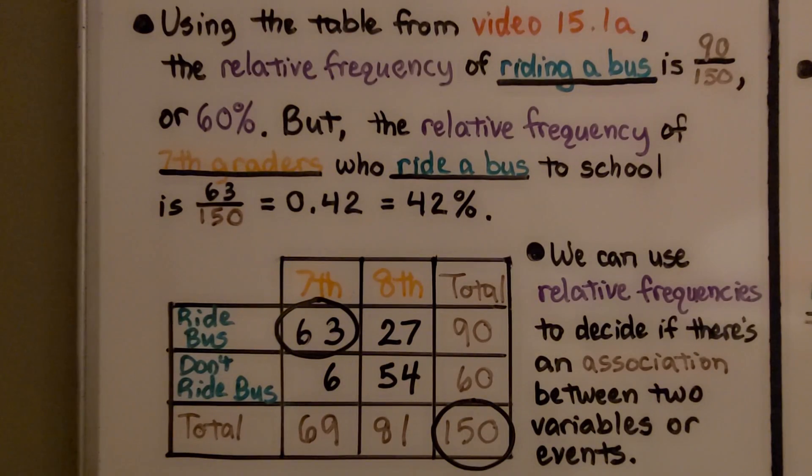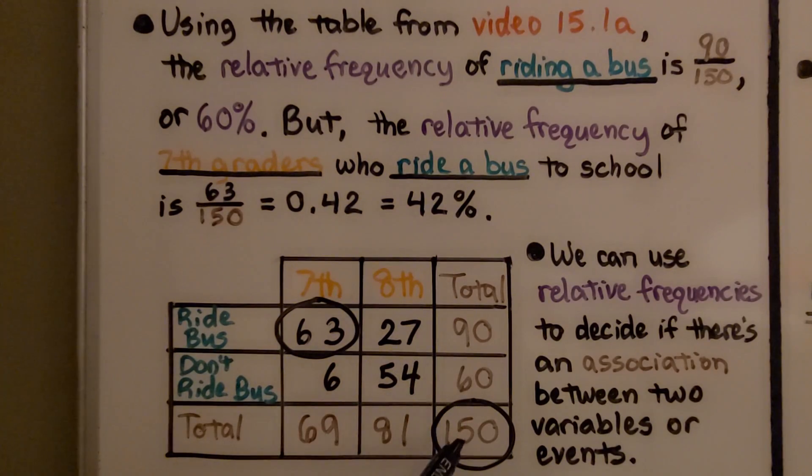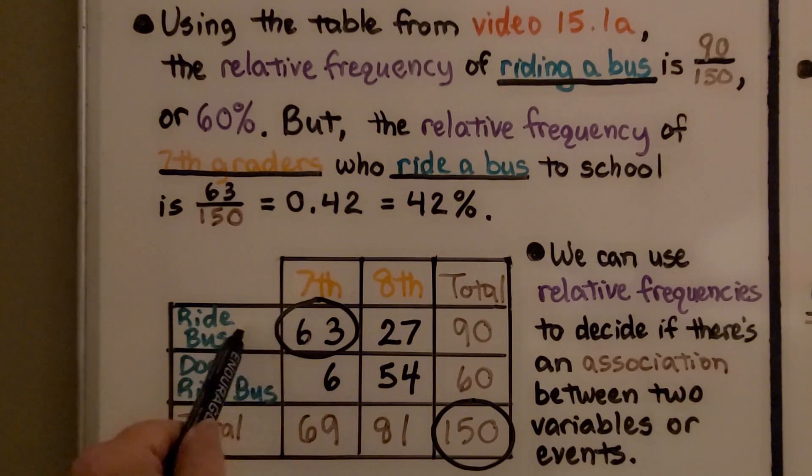Using the table from the previous video, 15.1a, the relative frequency of just riding a bus is 90/150, or 60%. We do 90 divided by 150.